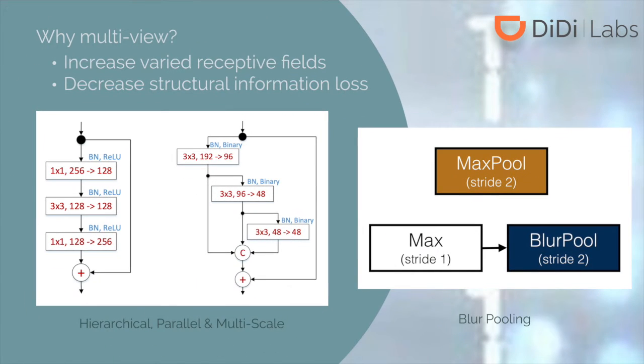Secondly, we replace ResNet blocks in stacked hourglass with hierarchical, parallel, and multiscale blocks in order to enlarge receptive fields that help capture structural information. Besides, those pooling layers are substituted with our blur pooling to decrease structural information loss.